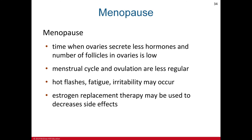Menopause is a natural phase in a female's timeline when the ovaries produce less hormone and the number of follicles in the ovaries is low. Physical effects include hot flashes, fatigue, and irritability. Estrogen replacement therapy (ERT) may be used to decrease these side effects, but ERT also has its own side effects, including an increased risk of heart attacks and other effects on the body.